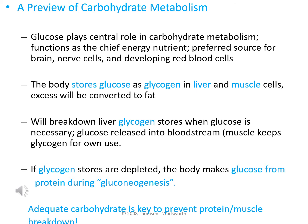Ideally, we don't want gluconeogenesis to happen — we don't want to be breaking down our muscle mass, which contains the protein stores, and converting those amino acids into glucose. To avoid this, we want to make sure we're consuming adequate amounts of carbohydrate. Adequate carbohydrate consumption is the key to prevent protein or muscle breakdown.